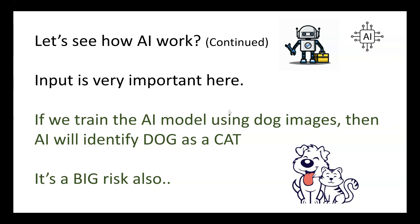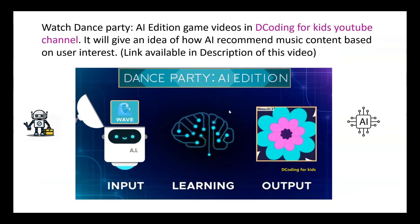In order to understand AI, there is a game on the Hour of Code website called Dance Party AI Edition. I have uploaded this game on my YouTube channel, Decoding for Kids. It will give an idea of how AI recommends music content based on user interest. The link is in the description, so please watch that video to get a clear idea of AI.